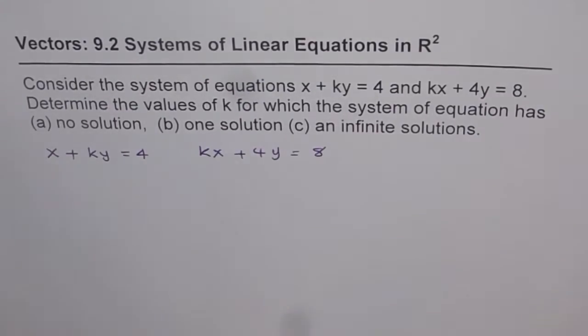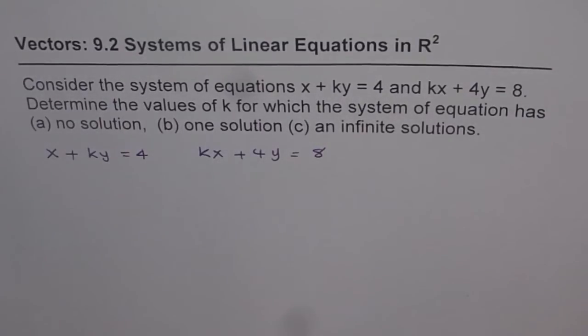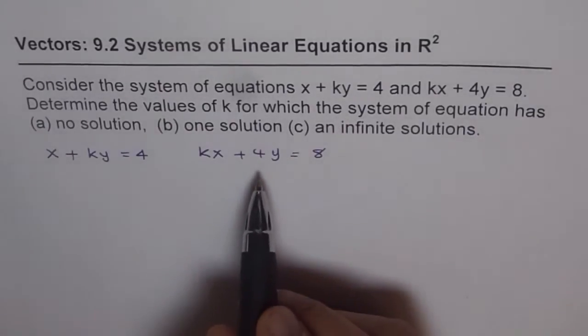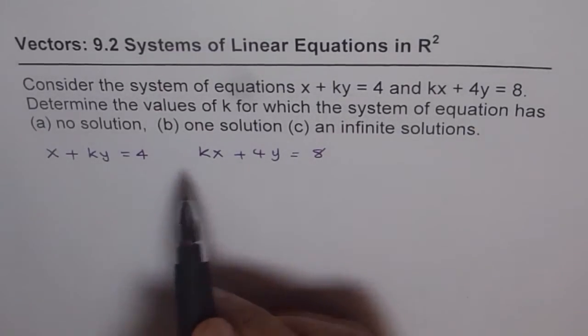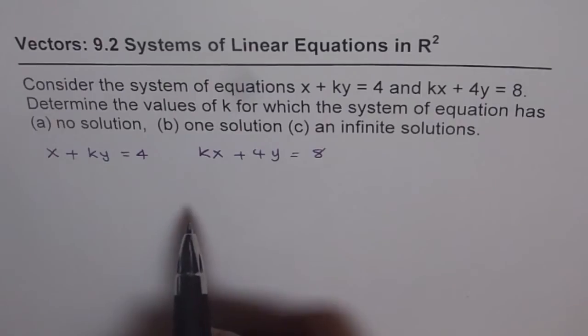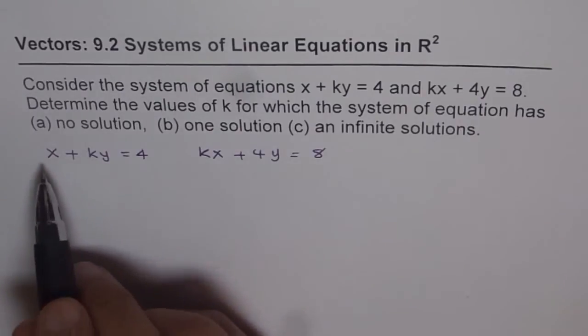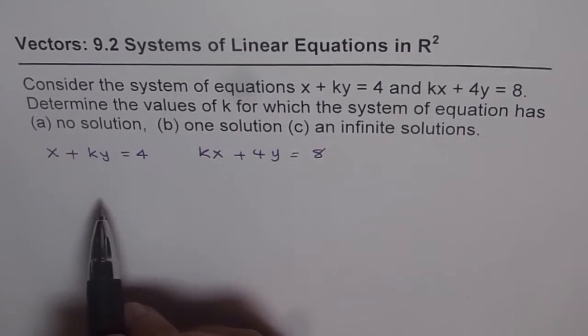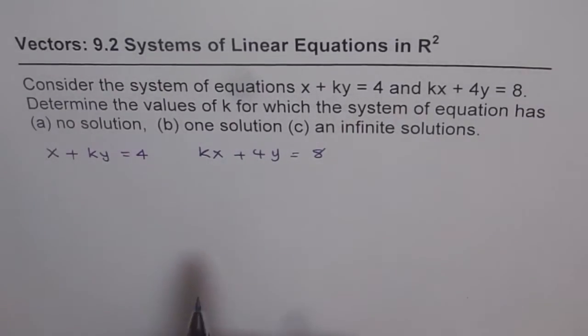The first one is x + ky = 4 and the second one is kx + 4y = 8. I will show you two approaches in this video, one using vectors fundamentals. You can see these equations as equations in scalar form, Cartesian equations for line in R², where the normal is (1, k) for the first equation and (k, 4) for the second equation.